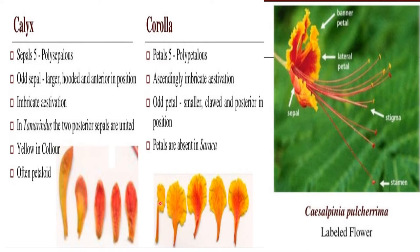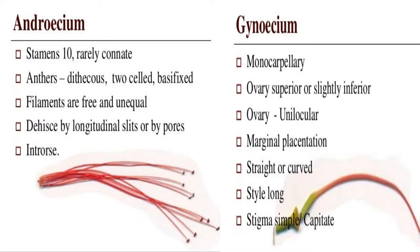Corolla: petals 5, polypetalous. Ascending imbricate aestivation. The odd petal is smaller and posterior in position. Androecium: stamens 10 — as you can see here, there are 10 stamens. Rarely connate. Anthers are dithecous, two-celled, and basifixed, as you can see here. Filaments are free and unequal in length. Dehiscence by longitudinal slit or bipores.